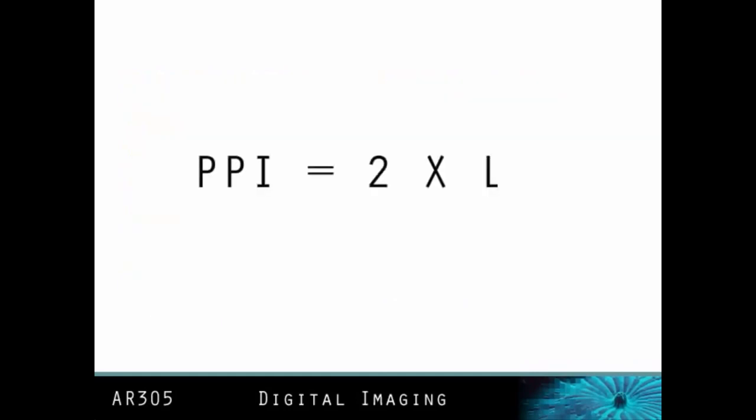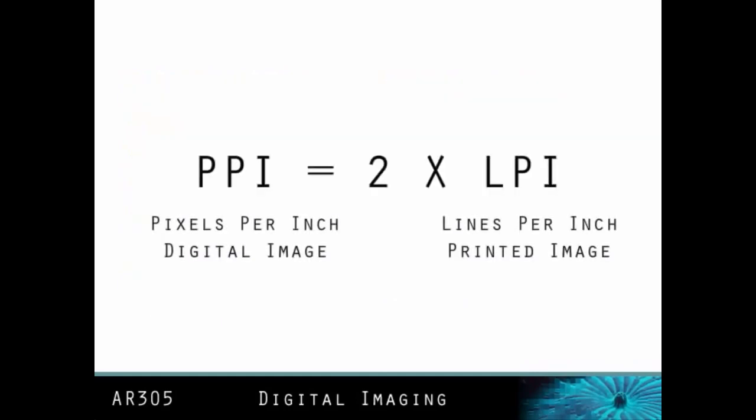To figure the correct resolution for a Photoshop image, the following formula is used: PPI equals two times LPI. PPI stands for pixels per inch and refers to the resolution of your Photoshop document. LPI stands for lines per inch and refers to the resolution of the halftone line screen used to reproduce your image in the final product.